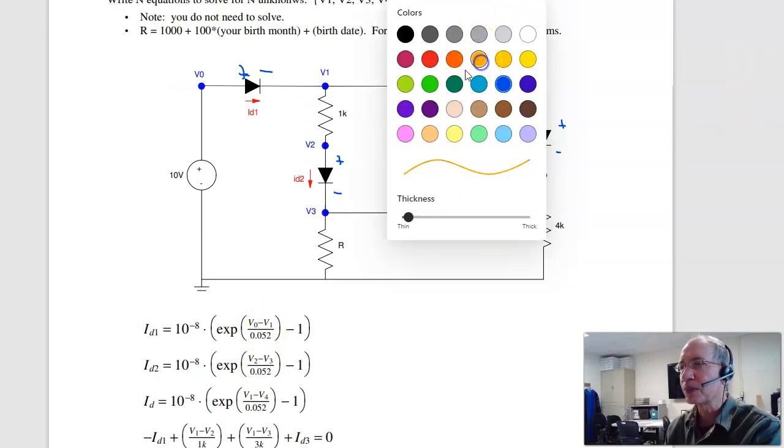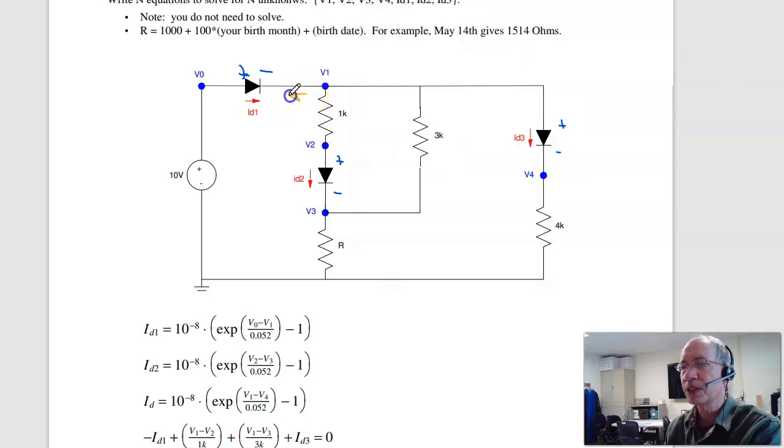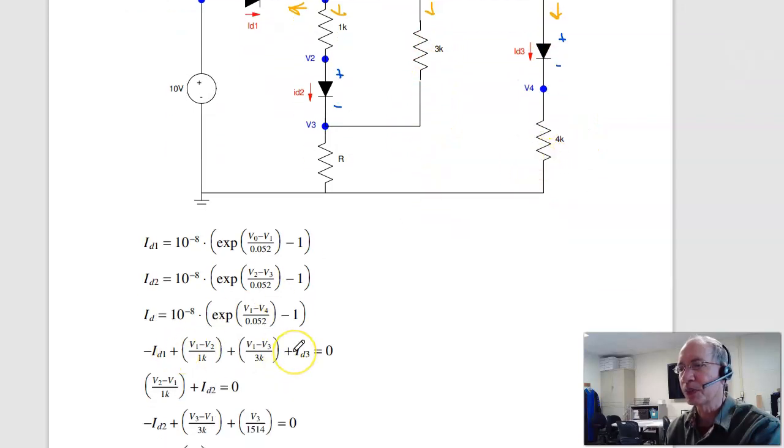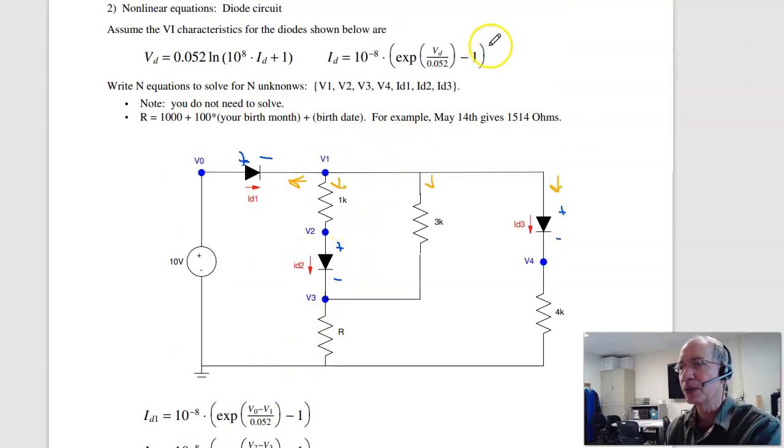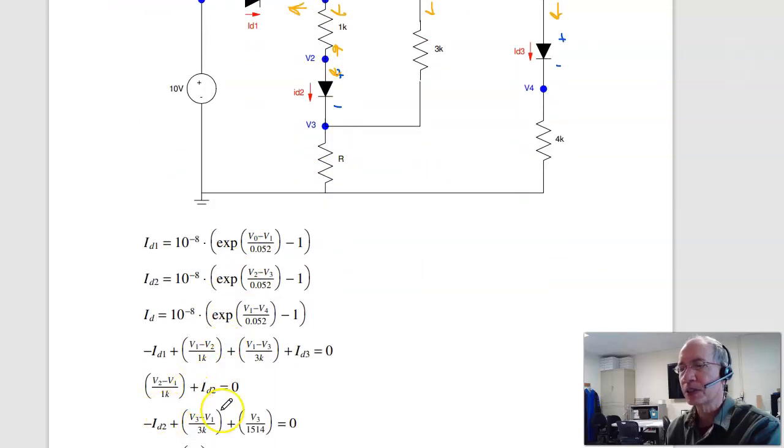For the currents, at node one, the current left, down, down, down has to add to zero. Current left is minus ID1, plus V1 minus V2 over 1k, plus V1 minus V3 over 3k, plus ID3 equals zero. At node two, current up plus the current down equals zero. Current up is V2 minus V1 over 1k plus ID2. Second equation.